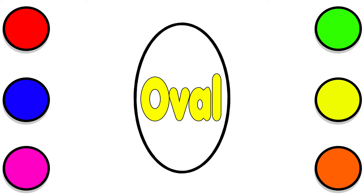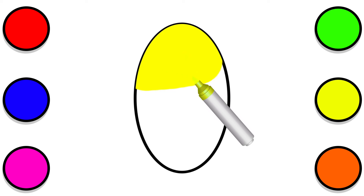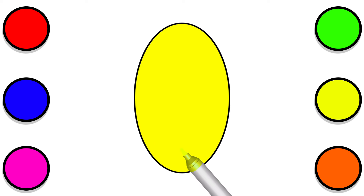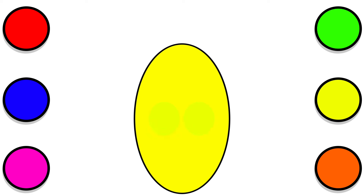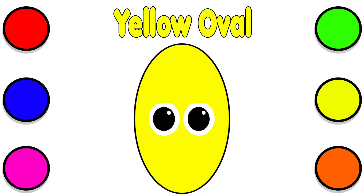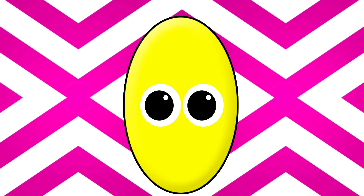Oval. Yellow Oval. An oval has no sides and no corners.